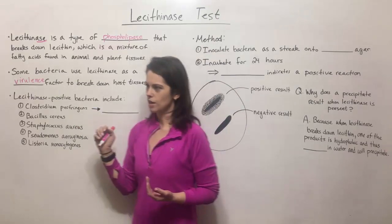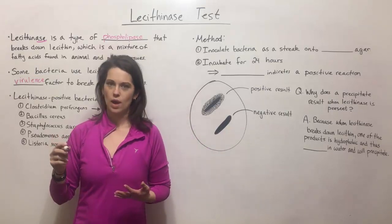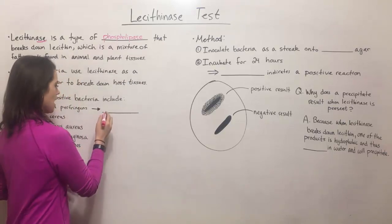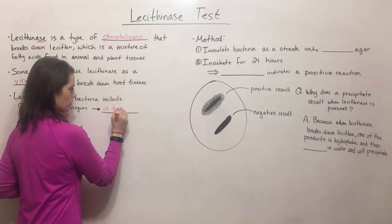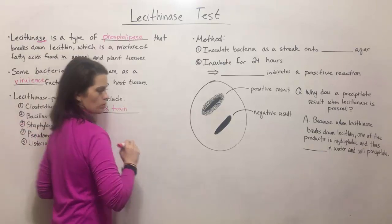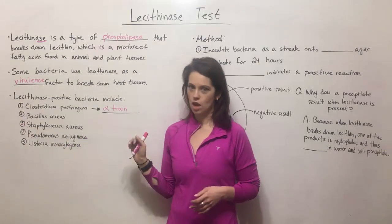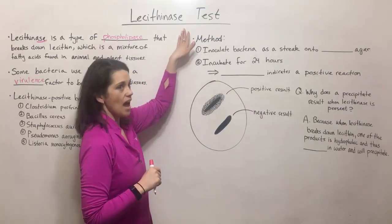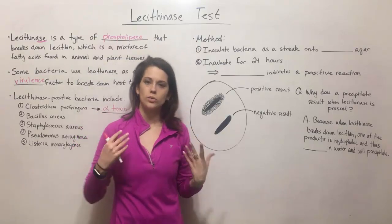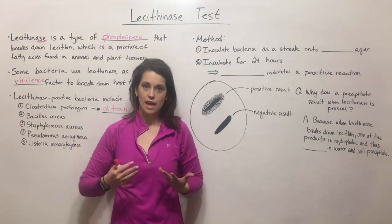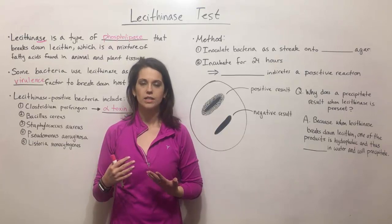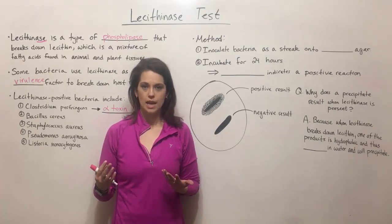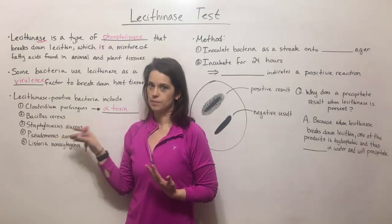Clostridium perfringens is known to have a particularly effective lecithinase, and it is actually called alpha toxin. So if you hear someone talking about the Clostridium perfringens alpha toxin, they're actually talking about a lecithinase. The lecithinase test is a way to take a bacterial isolate from a patient and determine whether or not it is capable of producing lecithinase, and so might be one of these types of bacteria.